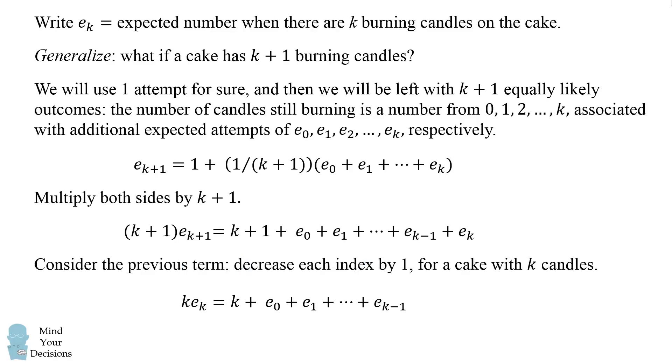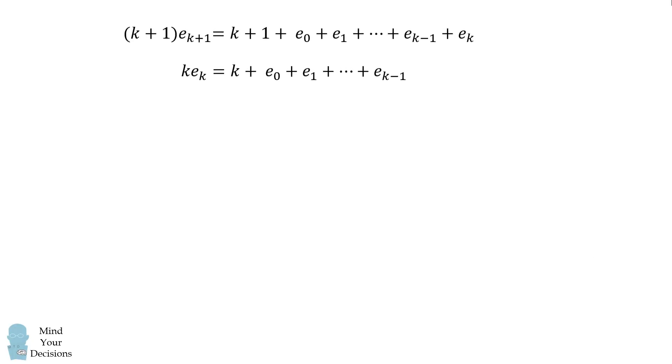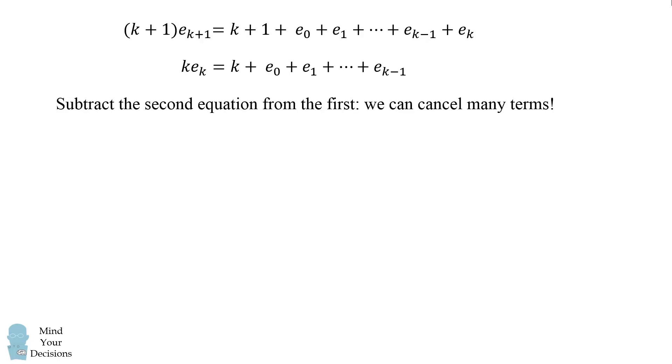Notice there are a lot of similar terms in these equations. So, we can simplify this by subtracting the second equation from the first. We can cancel many of these terms. On the right-hand side, the k's will cancel. e_0 will cancel. e_1 will cancel. All the way going up to e of k minus 1. When we do the subtraction, we have k plus 1 times e of k plus 1 minus k times e_k. And that equals 1 plus e_k. Now, we simplify this equation. And then, we solve for the difference of the two terms. And we get the difference e_k plus 1 minus e_k is equal to 1 over the quantity k plus 1.